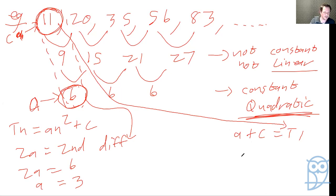This is when you start rushing stuff. So that is definitely a, and that is c. So a value is 3. 3 plus c equals my first term, which is 11. Therefore, c is 8. So therefore, my Tn value is 3n squared plus 8.